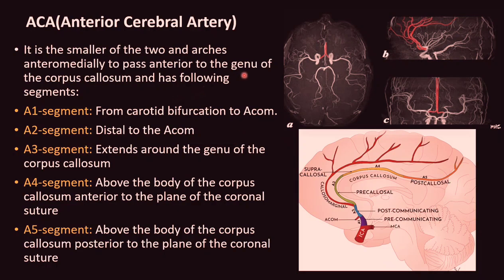The anterior cerebral artery, along with the middle cerebral artery, forms the termination of the internal carotid artery. It is the smaller of the two and arches anteromedially to pass anterior to the genu of the corpus callosum. Its segments are: A1 or the pre-communicating segment, extending from the ICA bifurcation to the anterior communicating artery; A2 from the anterior communicating artery to the origin of the callosomarginal artery; A3 extending from the genu of the corpus callosum anteriorly; and A4 lying above the body of the corpus callosum anterior to the coronal suture.